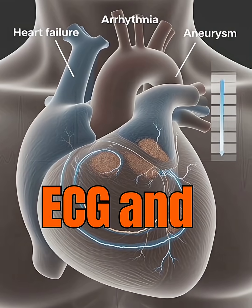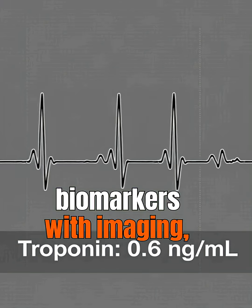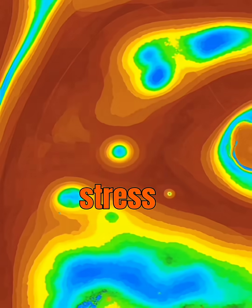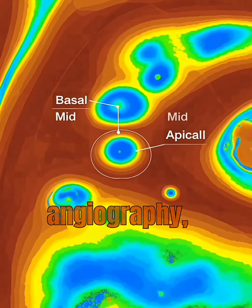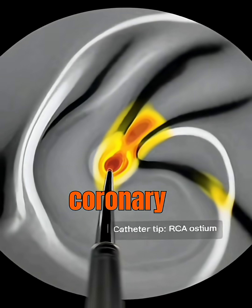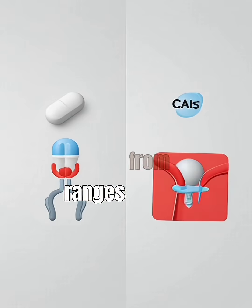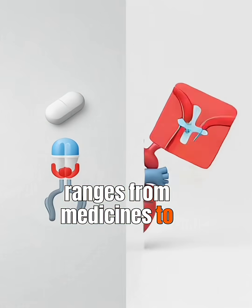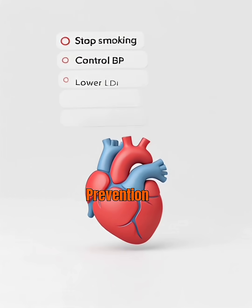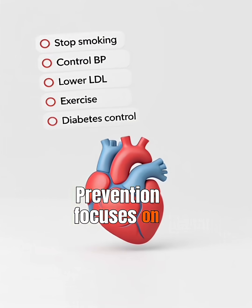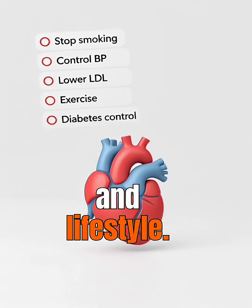Diagnosis combines ECG and biomarkers with imaging, stress tests, CT angiography, and invasive coronary angiography. Treatment ranges from medicines to stents or bypass. Prevention focuses on risk factor control and lifestyle.